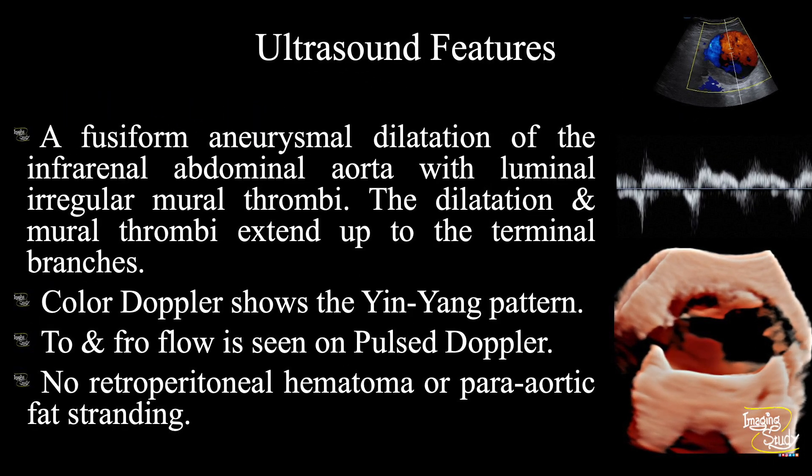In summary: a fusiform aneurysmal dilatation of the infrarenal abdominal aorta is seen with luminal irregular mural thrombi. The dilatation and mural thrombi extend up to the terminal branches. Color Doppler shows an internal yin-yang pattern or pepsi sign. To-and-fro flow is seen on pulse wave Doppler. There was no retroperitoneal hematoma or para-aortic fat stranding, which should be present in case of rupture. So this is a case of abdominal aortic aneurysm.